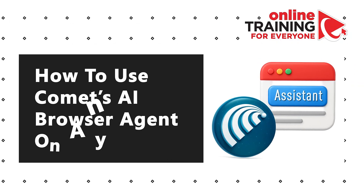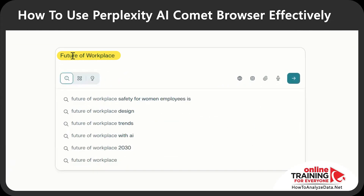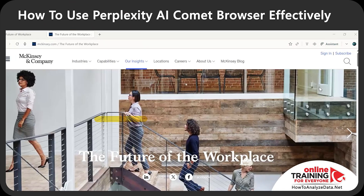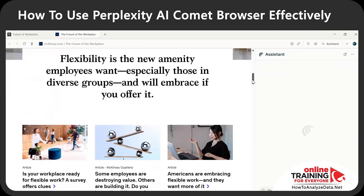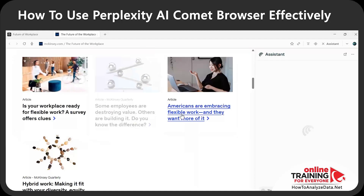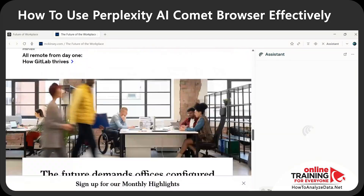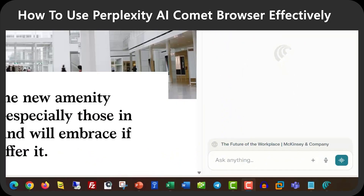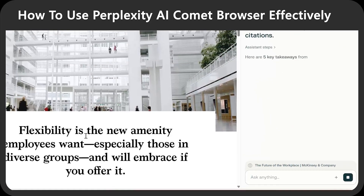Let me show you how to use Comet's AI features on any page. Let's say I'm researching the topic future workplace, and I found an interesting report from McKinsey. I'm going to open it in a new tab and bring in Comet's assistant, which is located in the upper right corner. This page is very long and it will take a lot of time to complete the research. It also has a lot of sub-pages and I need my results quickly. I can just ask the AI assistant to give me five takeaways with citations, and in seconds I got the response back.